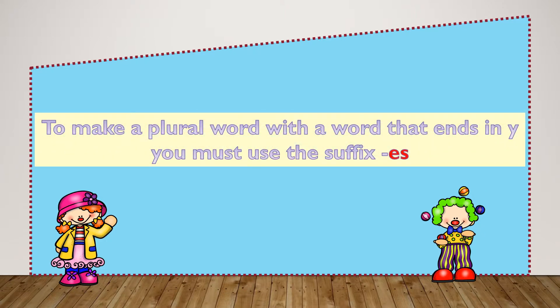Now let's talk about when we make a plural word. When a base word ends in Y and we want to make a plural word, we don't use the suffix -s, we use the suffix -es. So when we want to make a plural word, we change the Y to an I and then we add the suffix -es.